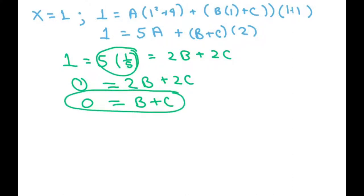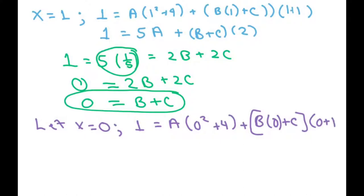Now the other one I want to do is let x equals 0. When we let x equals 0, we get 1 equals A(0²+4) + B(0) + C(0+1). So in this case, we get 1 equals 4A. This goes away, this is 1, so you get plus C.